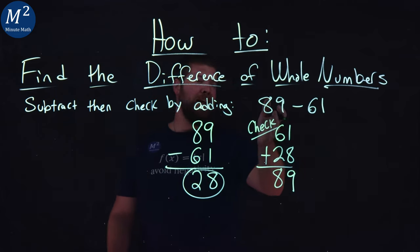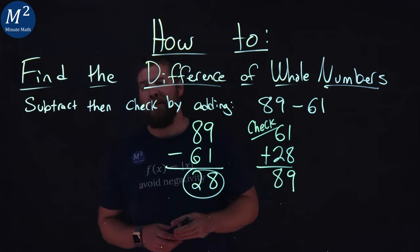So anyway, our answer, 89 minus 61, is a good old 28.